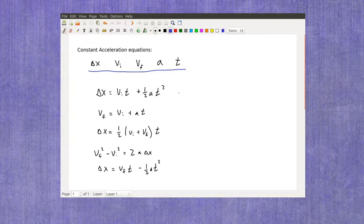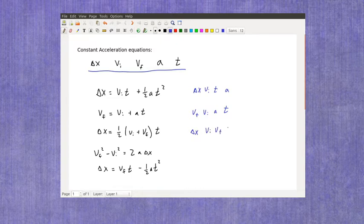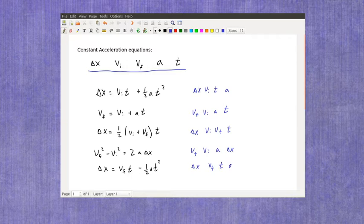And just kind of going through and writing them in the order that they're shown, you've got delta x, vi, t, and a; vf, vi, a, and t; delta x, vi, vf, and t; vf, vi, a, and delta x; and delta x, vf, t, and a. And yes, in some of these equations, the time is in there twice, but it's still one variable.